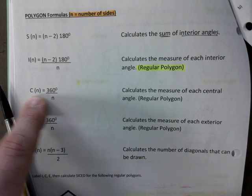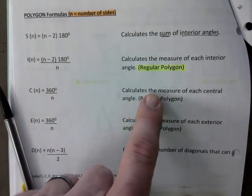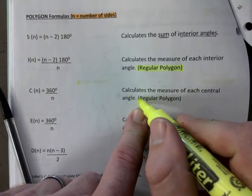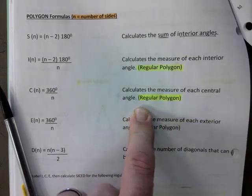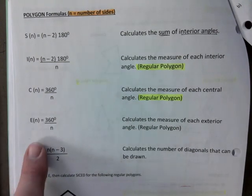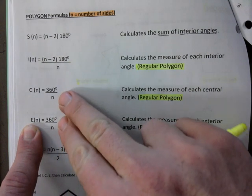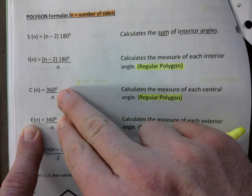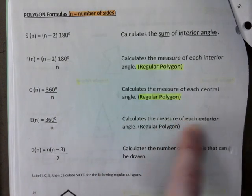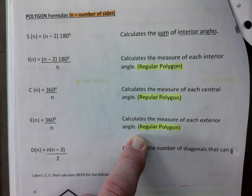The central angle, right? See this one here calculates the central angle, the measure of each central angle. And again, it only works if it's a regular polygon, which most of them will be. The exterior angle. Yes. They are exactly the same. You're not, I didn't make a mistake. Right. But calculates the measure of each exterior angle, but only works when there's a regular polygon.